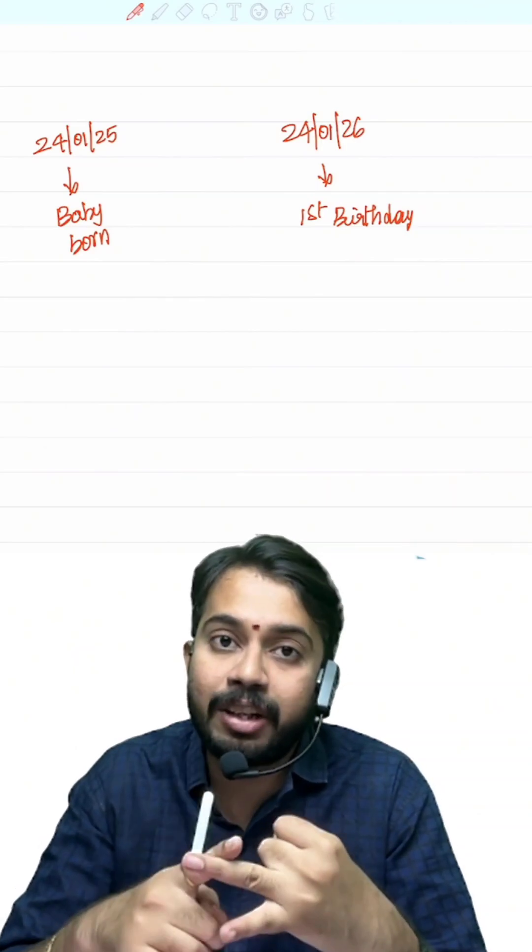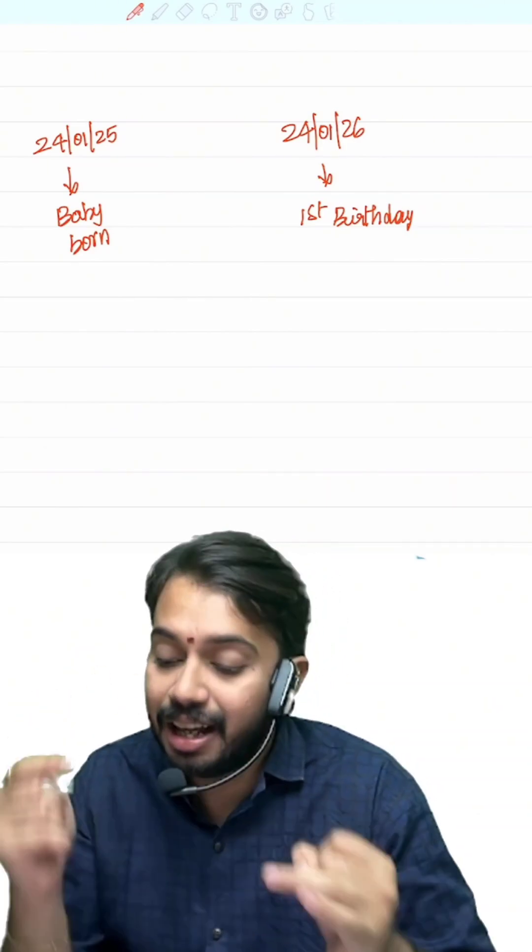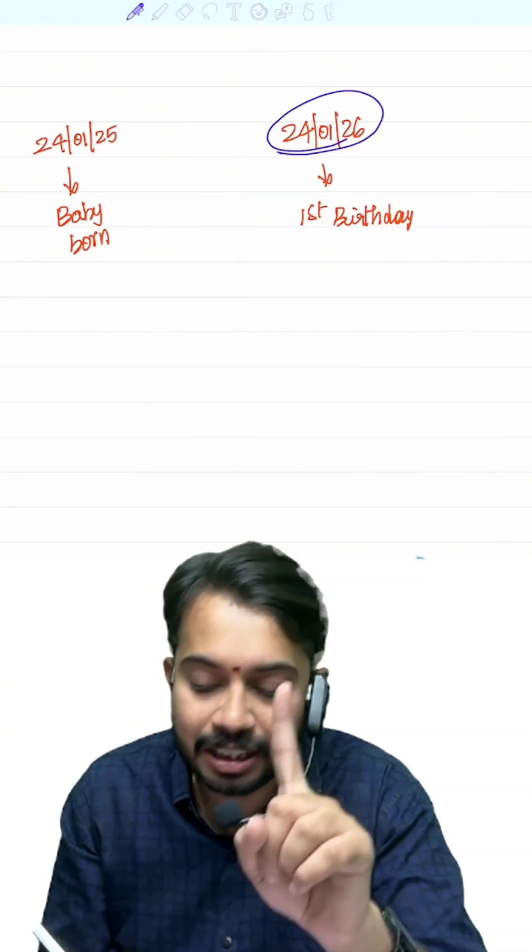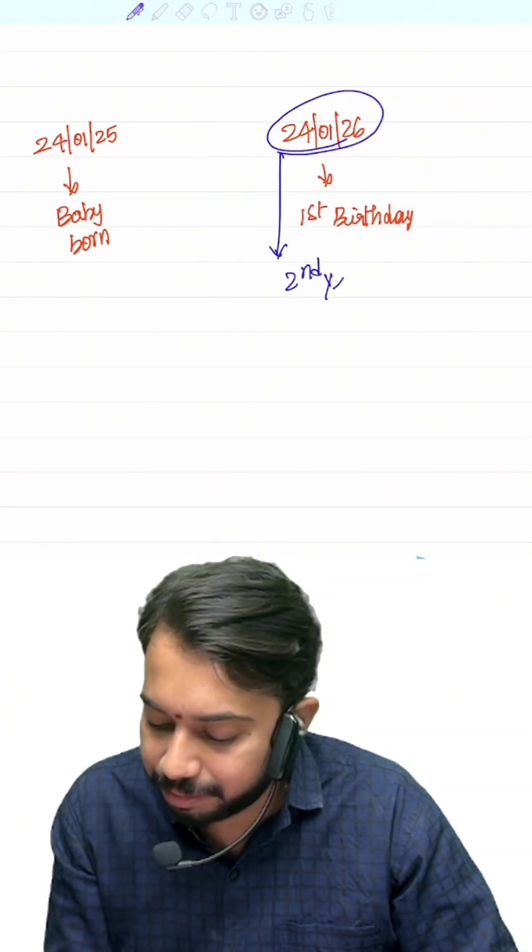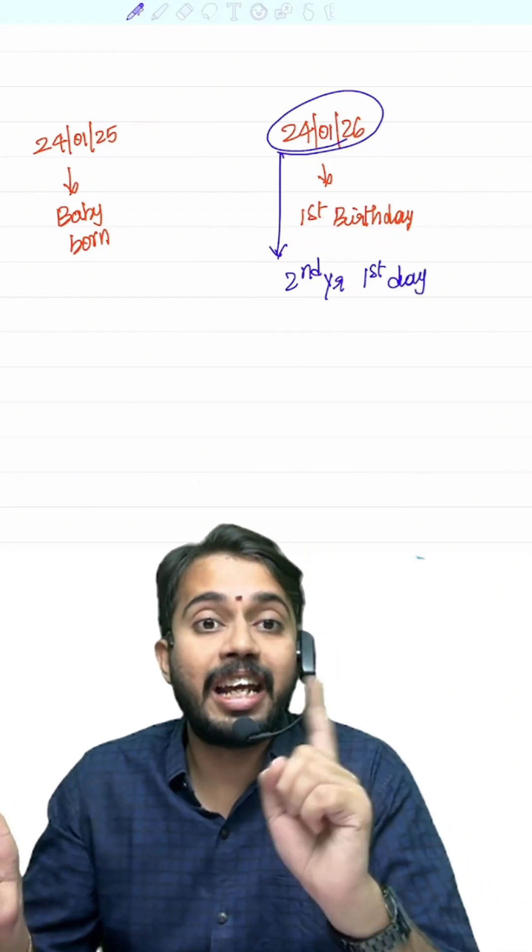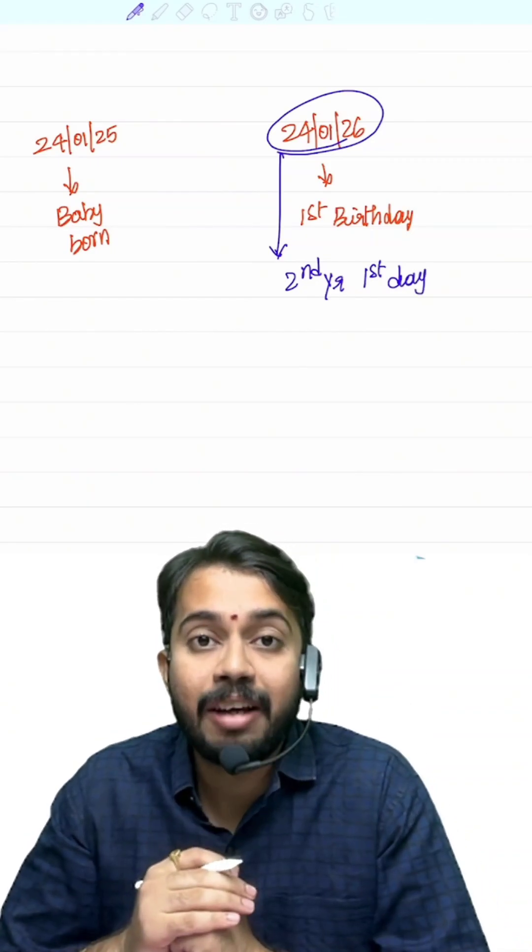Second 24th January was spent in the year 2026. That means what? Logically, 24th January 2026 is not first year. This is second year first day. On second year first day, the baby is celebrating first birthday.